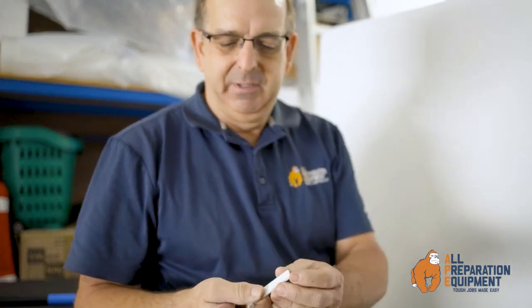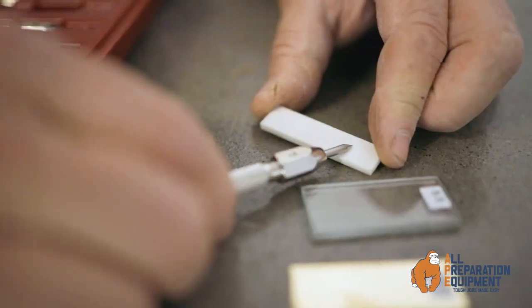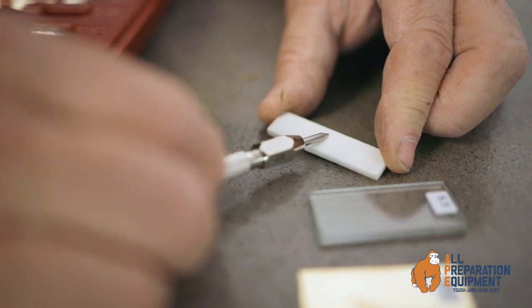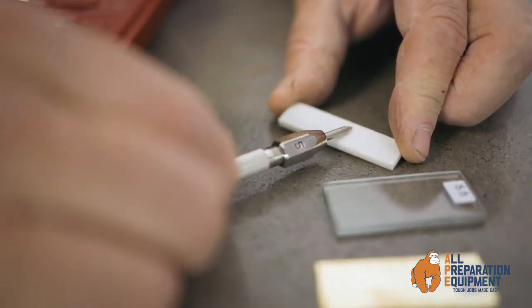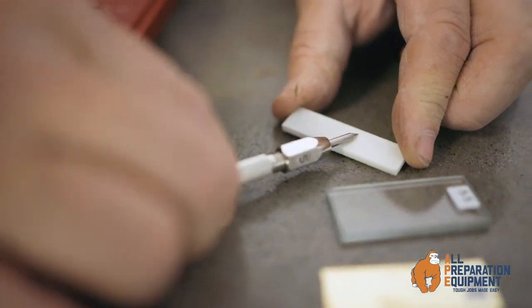Also in your Mohs hardness test kit you'll find a sharpening stone. This is quite useful when the tips get a bit blunt. You can sharpen and hone up the tips by rotating it with the angle hard on the surface there.